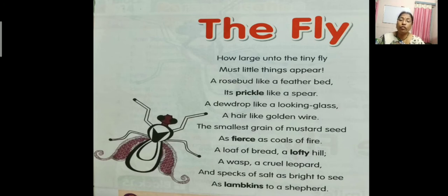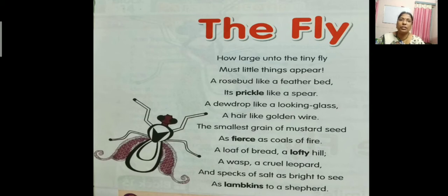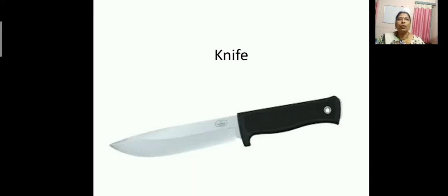'A loaf of bread, a lofty hill. A wasp, a cruel leopard. And specks of salt as bright to see as lambkins to a shepherd.' Now look at this picture, children. What is this? Yes, it is a knife. Your mother uses it to cut vegetables.